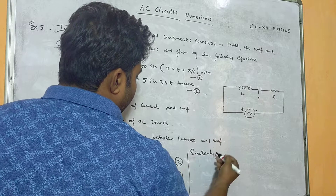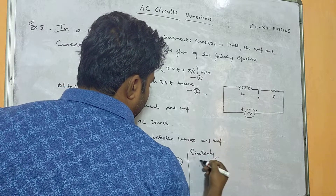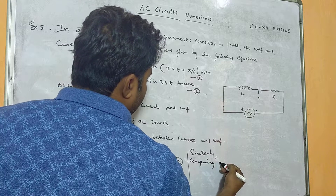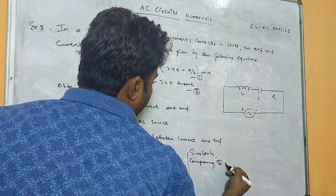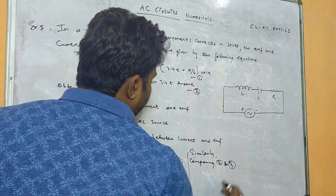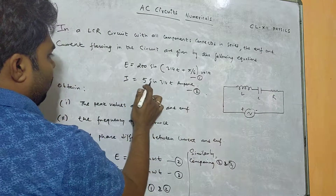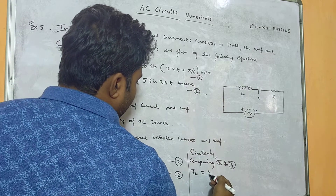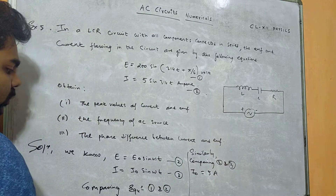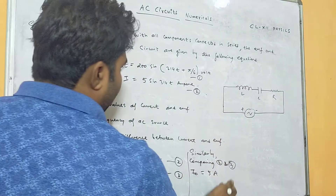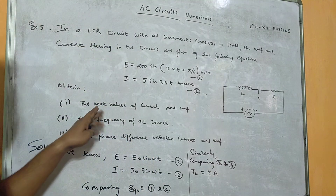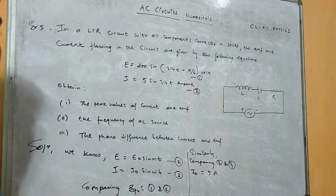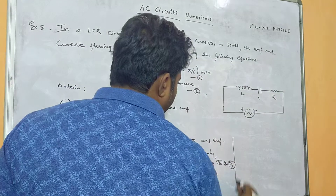Similarly, comparing equations 2 and 3, in place of I-naught what we have is 5, so I-naught equals 5 ampere. So E-naught is 200 volts and I-naught is 5 ampere.